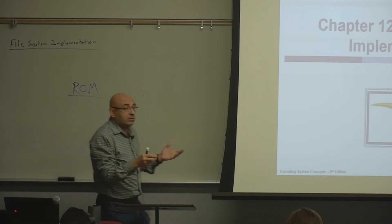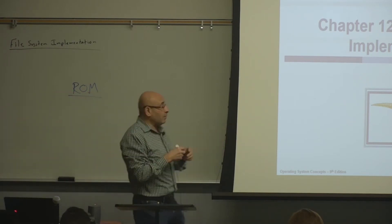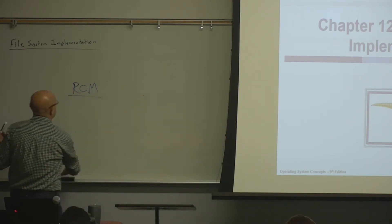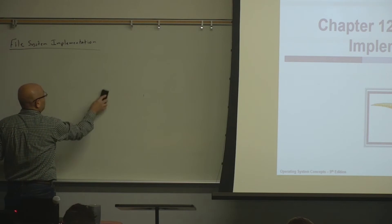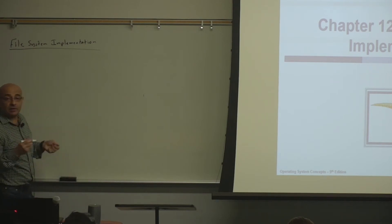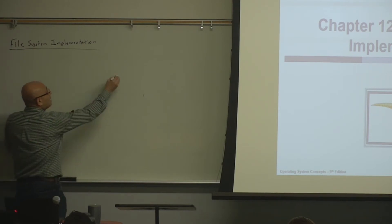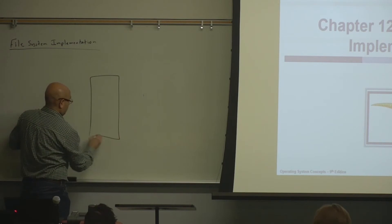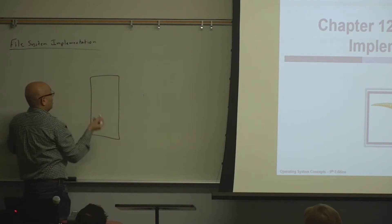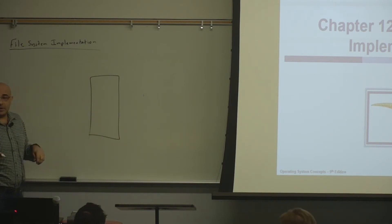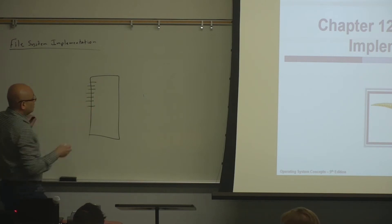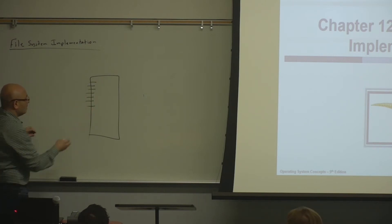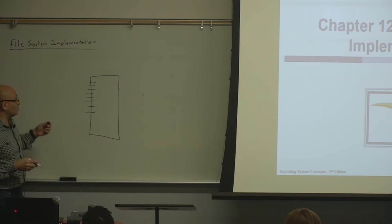How does it implement this? For us it looks like we have a directory structure with a bunch of folders or directories, and in each directory there are files. The file will look like a contiguous piece of data or code, whether it's a text file or a code file.